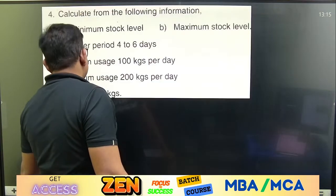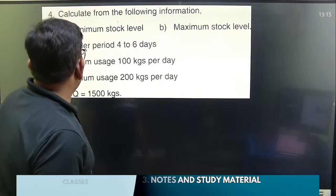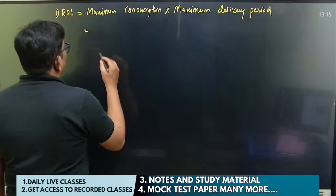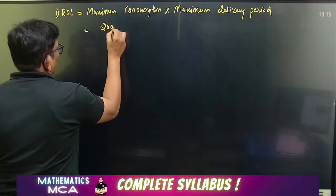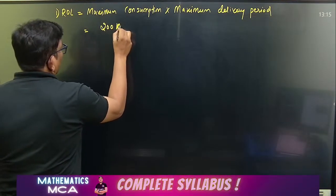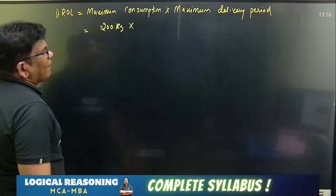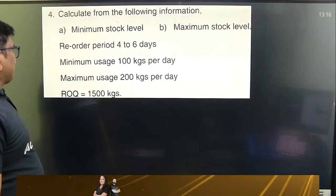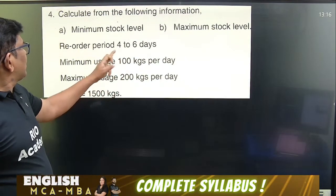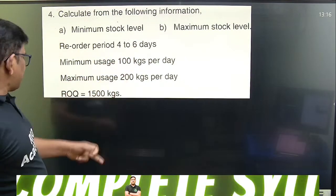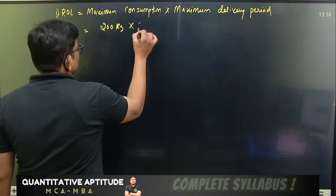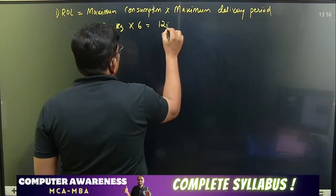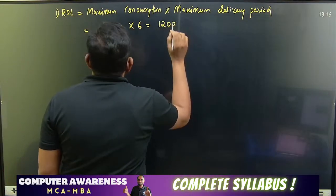What is the maximum consumption? Maximum consumption is 200 kg. Multiply by the maximum delivery period, which is 6. So 200 into 6 equals 1,200.